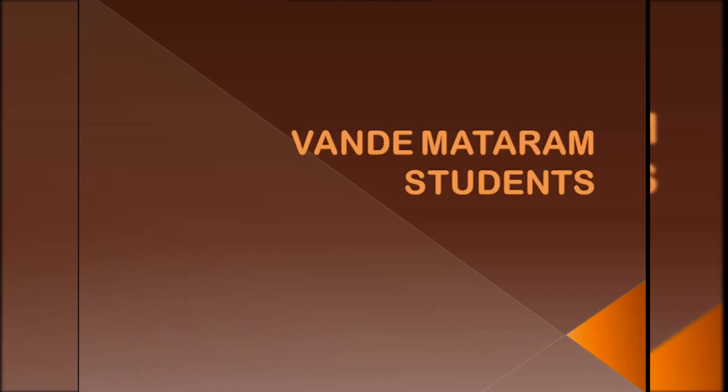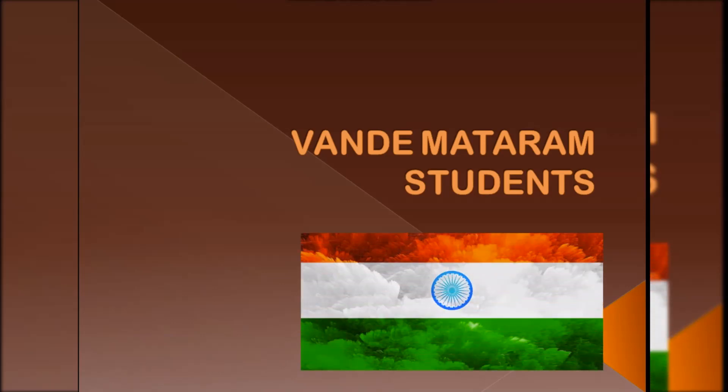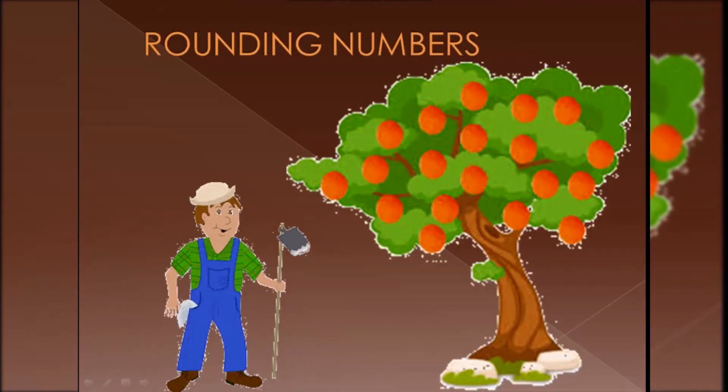Good day students. Today we will learn about the rounding of numbers. Sometimes in real life we make estimations as we don't know the exact number of something. For example, when we see a class we can say there are about 50 students in the class.